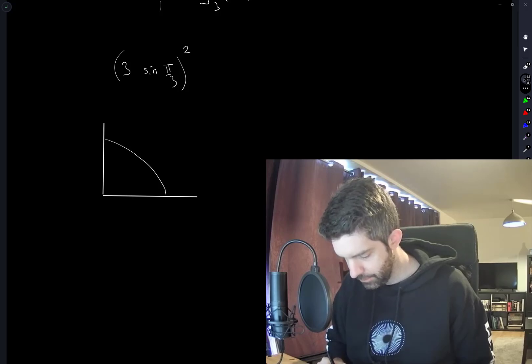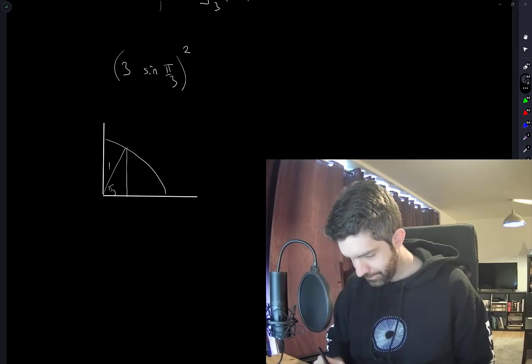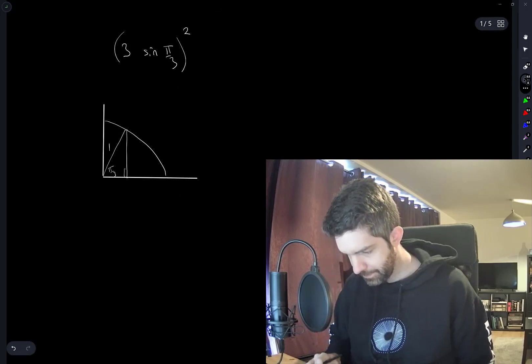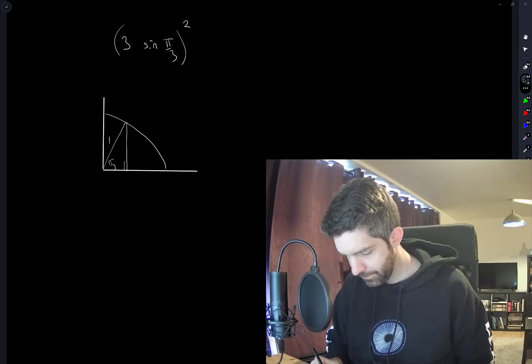So pi over 3 is something like that. So what do we have here?